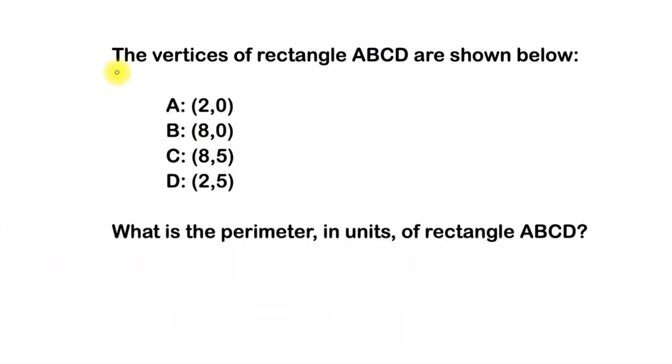So this question says, the vertices of rectangle ABCD are shown below. A is at (2,0), B is located at (8,0), C is located at (8,5), and D is located at (2,5). What is the perimeter in units of rectangle ABCD?